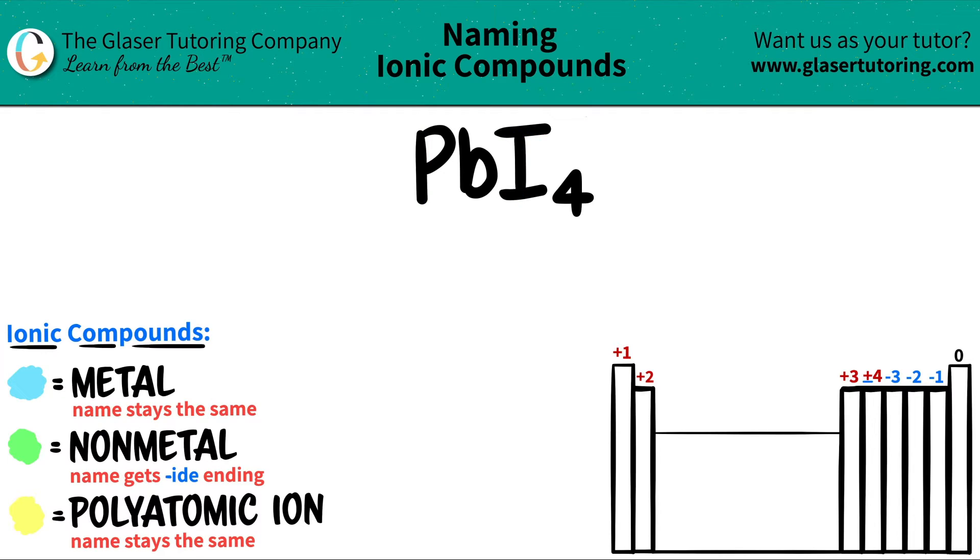Let's map where these are, and that will get us an idea why it's an ionic compound. Lead is a metal. Lead is over here on the periodic table, somewhere down here.